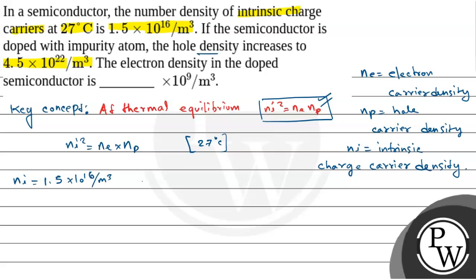What is given? The hole density. The hole density, that is Np, equals 4.5 × 10^22 per meter cube. We need to find Ne, the electron density.